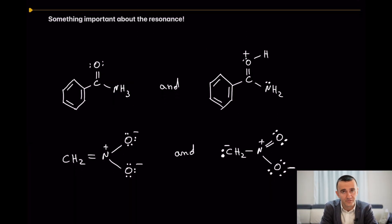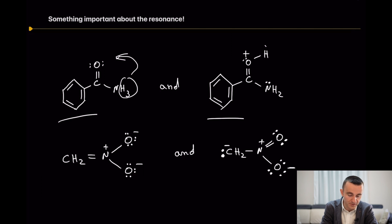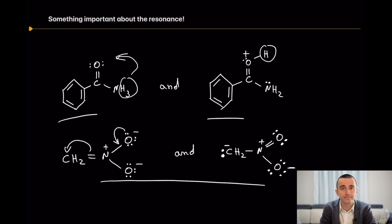Something important about resonance structures: when you draw them, you must not shift any atoms. As you can see, these two structures are not resonance structures because a hydrogen has moved from one position to another — that is not allowed. But in this case, they are resonance structures because only the lone pair moved to form a pi bond, and the pi bond moved — no atoms shifted.